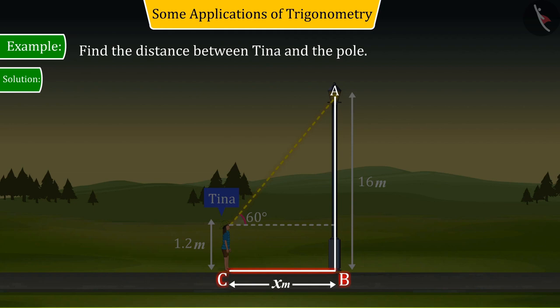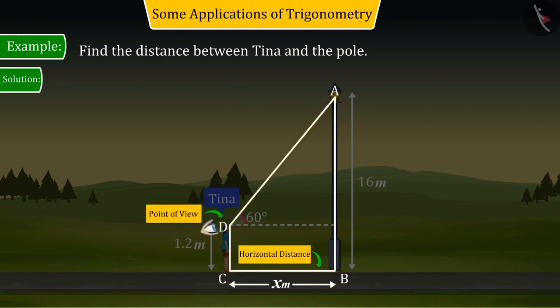Since we have to find the horizontal distance between Tina and the pole, draw a horizontal line relative to Tina's point of view D, which is perpendicular to AB.